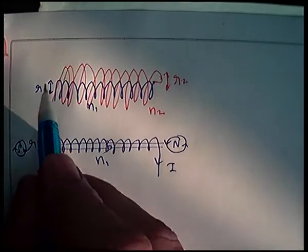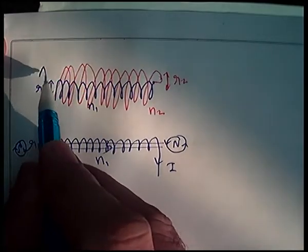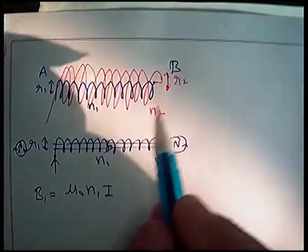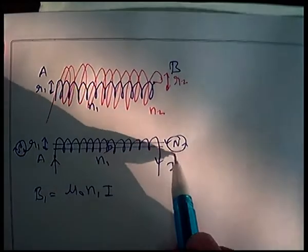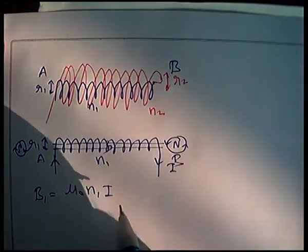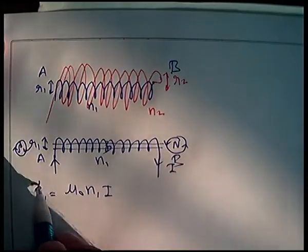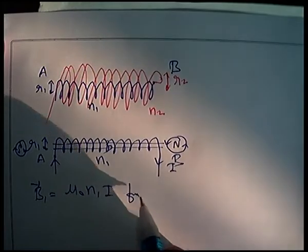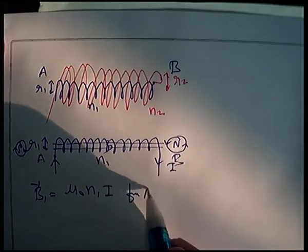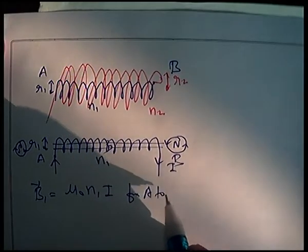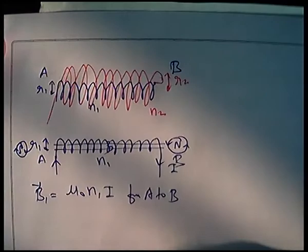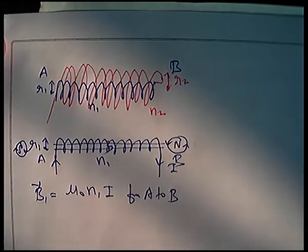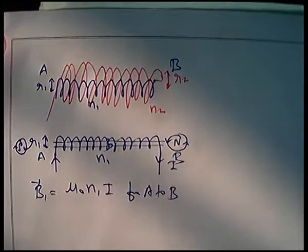This end is A and this end is B. The direction of this magnetic field is from A to B.